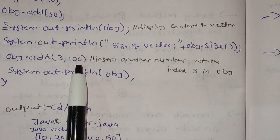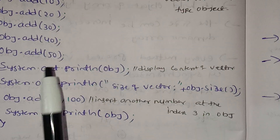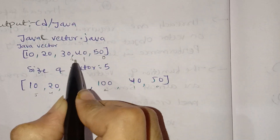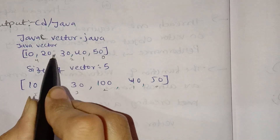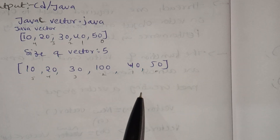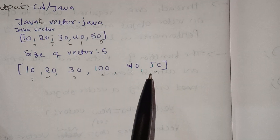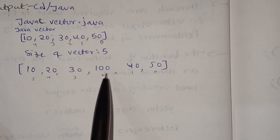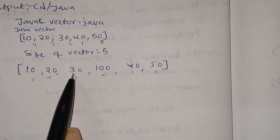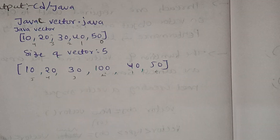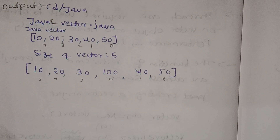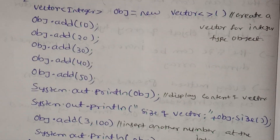We use object.get to retrieve elements at a specific index. Index positions are 0, 1, 2, 3. For example, index 3 returns the element at that position — which would be 40.